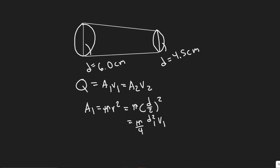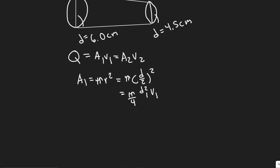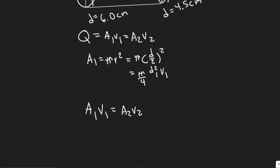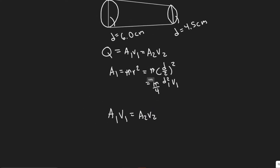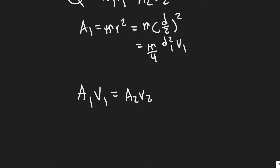We're going to use two formulas: the Bernoulli equation and the continuity equation. The continuity equation tells us A1 V1 equals A2 V2 — essentially, the flow rate at any point has to be equal. The cross-sectional area multiplied by the velocity at one point must equal the cross-sectional area at another point multiplied by the velocity at that point.